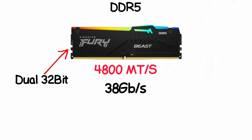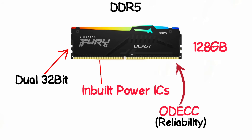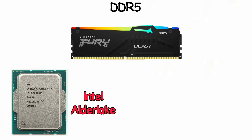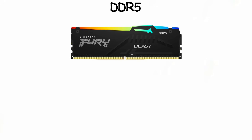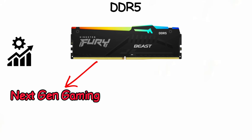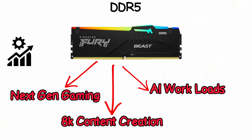DDR5 uses dual 32-bit channels for better multitasking with built-in power management ICs. DDR5 modules have massive capacities of up to 128 gigabytes per module and include on-die ECC for reliability. DDR5 was first adopted by Intel Alder Lake and AMD Ryzen 7000, and provides smoother performance for next-gen gaming, 8K content creation, and heavy AI workloads.